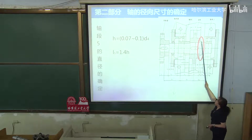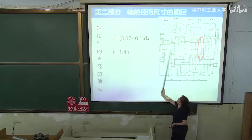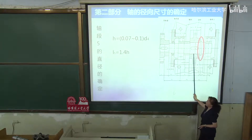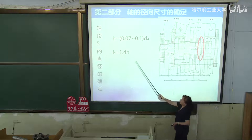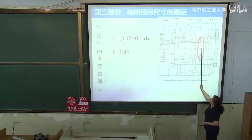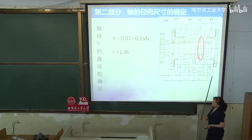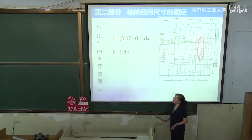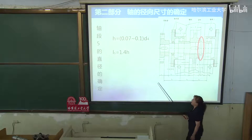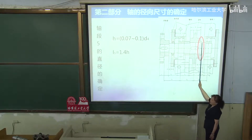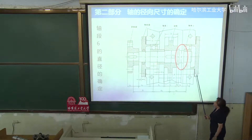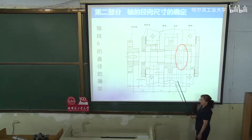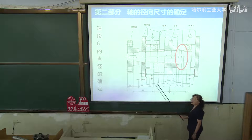第五段轴径是定位轴环。定位轴肩高度h = 0.07~0.1倍的第四段直径。轴环的宽度（轴向尺寸）等于1.4倍的h，但注意最小也得是5毫米以上。这是一个定位面。